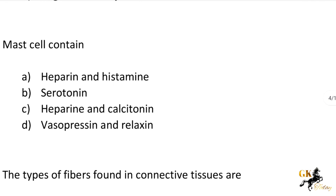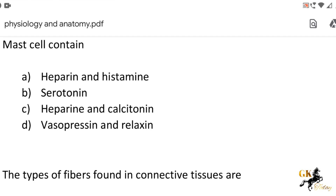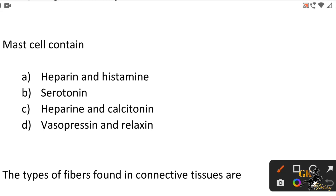Next question: Mast cells contain — Option A: Heparin and histamine. Option B: Serotonin. Option C: Heparin and calcitonin. Option D: Vasopressin and relaxin. The correct answer is Option A: Heparin and histamine.